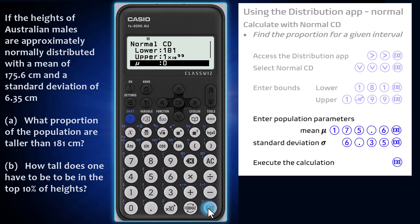Second, enter the population parameters. First, mu, the population mean of 175.6 centimeters, then sigma, the population standard deviation of 6.35 centimeters. With these inputs entered, press execute once more to complete the calculation.